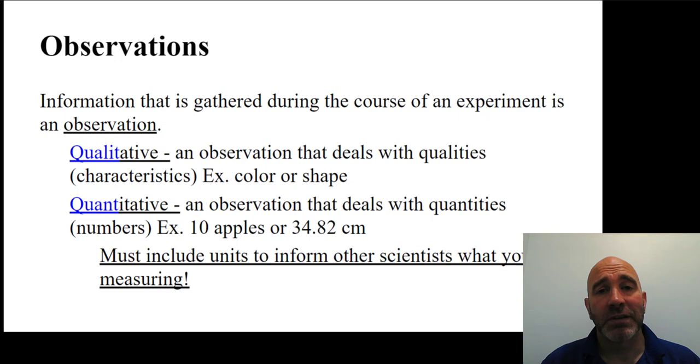Basically, scientists pay attention and make observations about one very specific thing. And we call these observations. This is information that is gathered during the course of an experiment. We call this an observation or observations, and we divide it into two types.